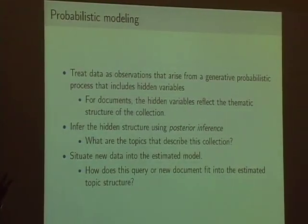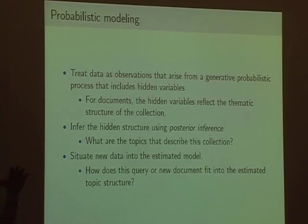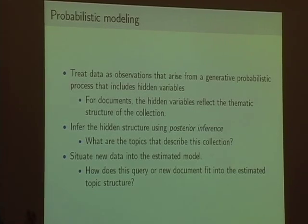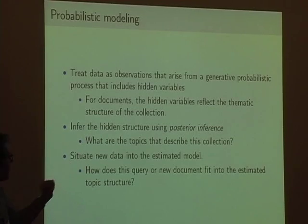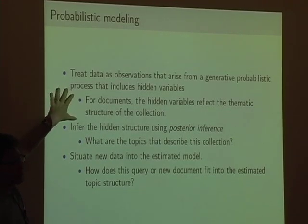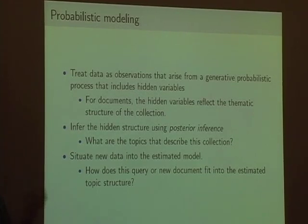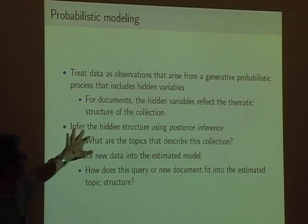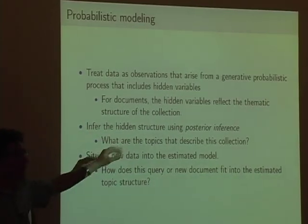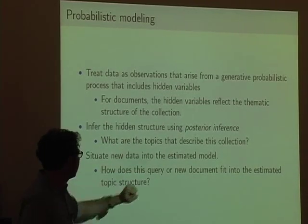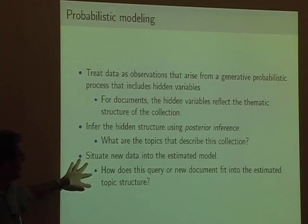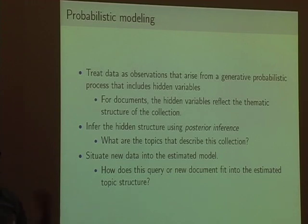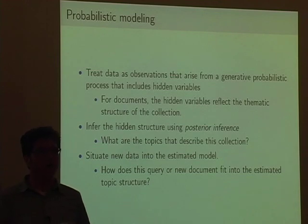We're going to take our documents and model them probabilistically. In probabilistic modeling, we treat our data as observations that arise from some generative process that includes things we can't observe. In the case of modeling document collections, the things we can't observe are the underlying thematic structure of the collection. Then we take the things we do observe — the documents — and infer what that hidden structure is using posterior inference. Finally, we situate new data into the estimated model for things like information retrieval or classification.